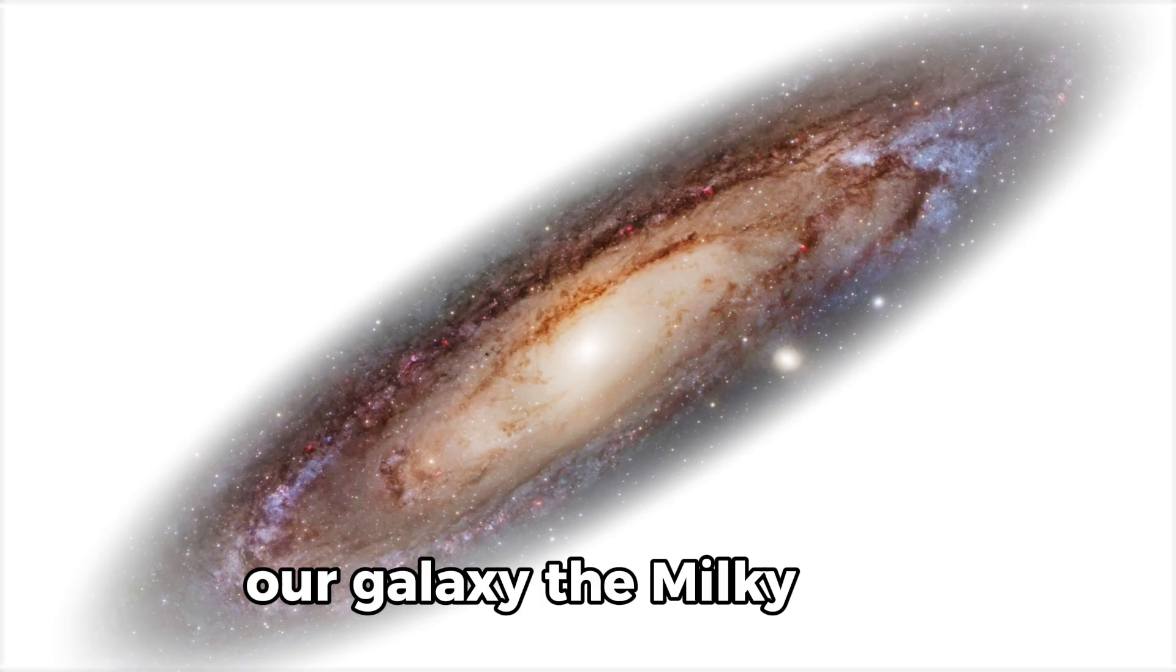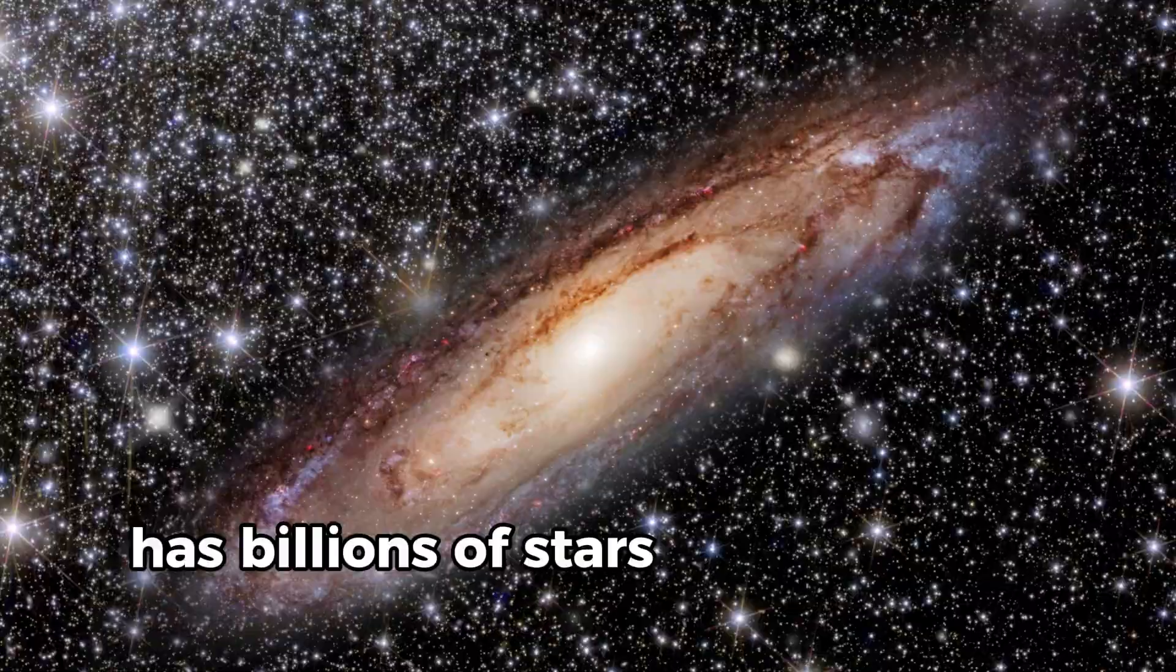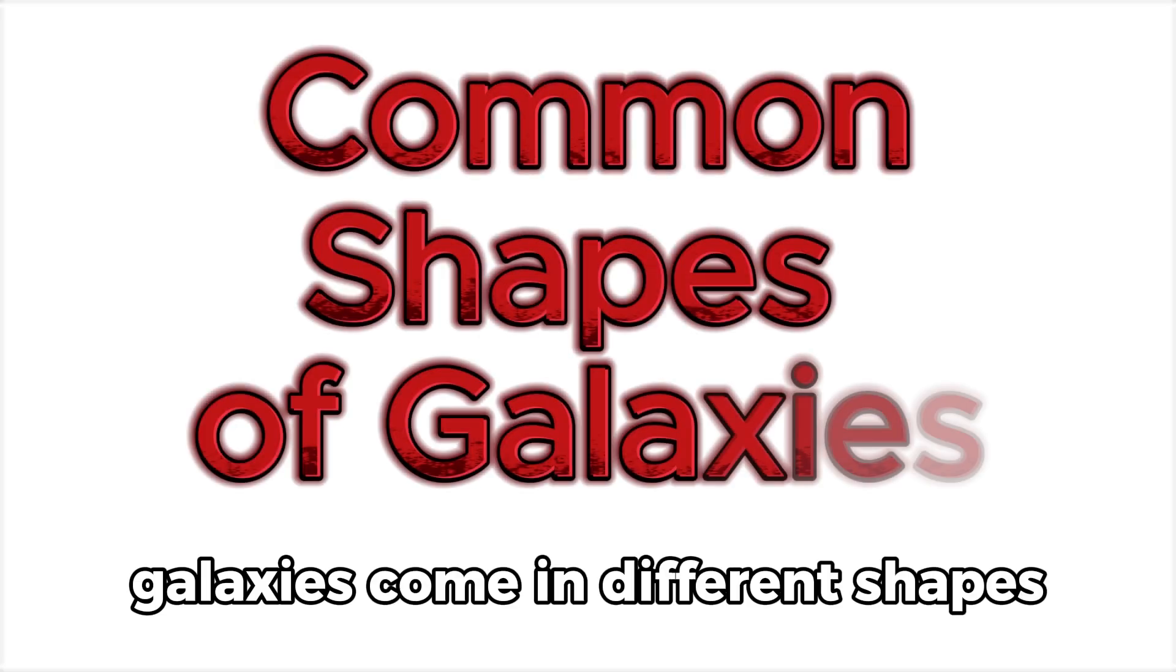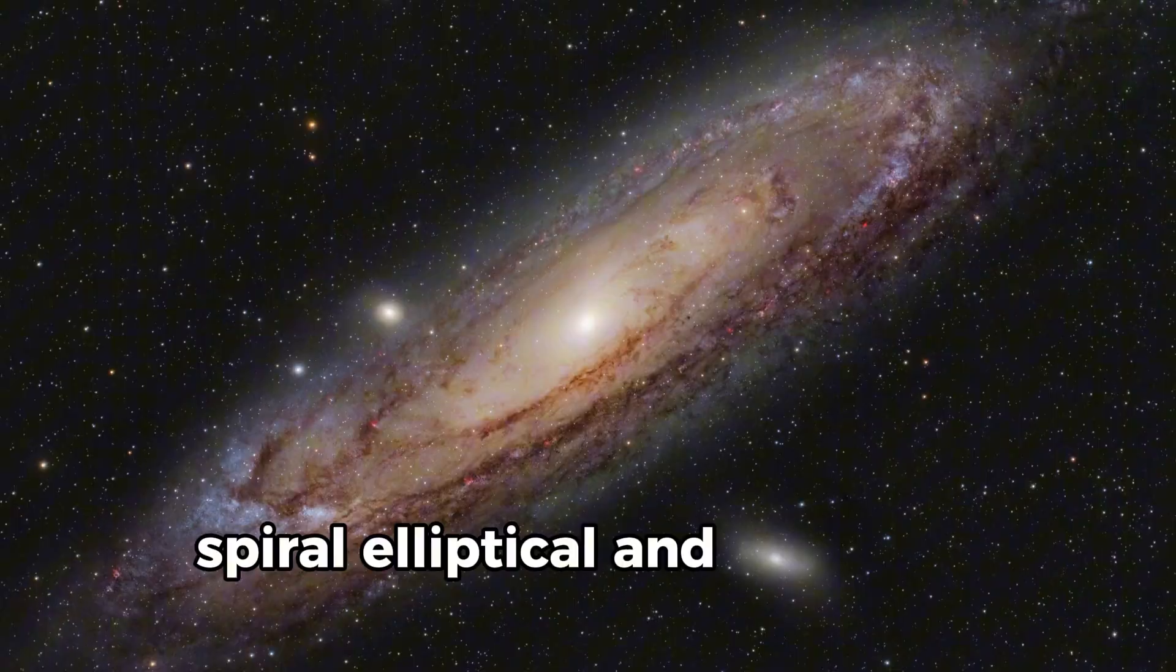Our galaxy, the Milky Way, has billions of stars, including our Sun. Galaxies come in different shapes: spiral, elliptical, and irregular.